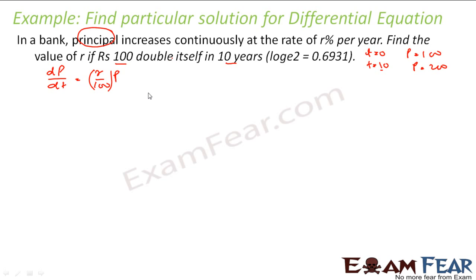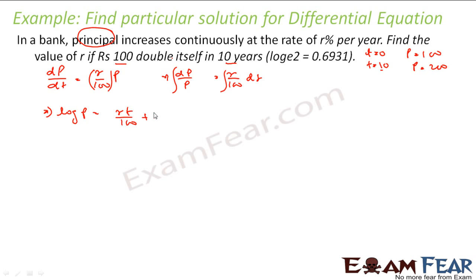Let us solve this. Separating variables: dp/p = r/100 · dt. Integrating both sides gives log(p) = r/100 · t + c. Putting t = 0 and p = 100: log(100) = 0 + k, so k = log(100).